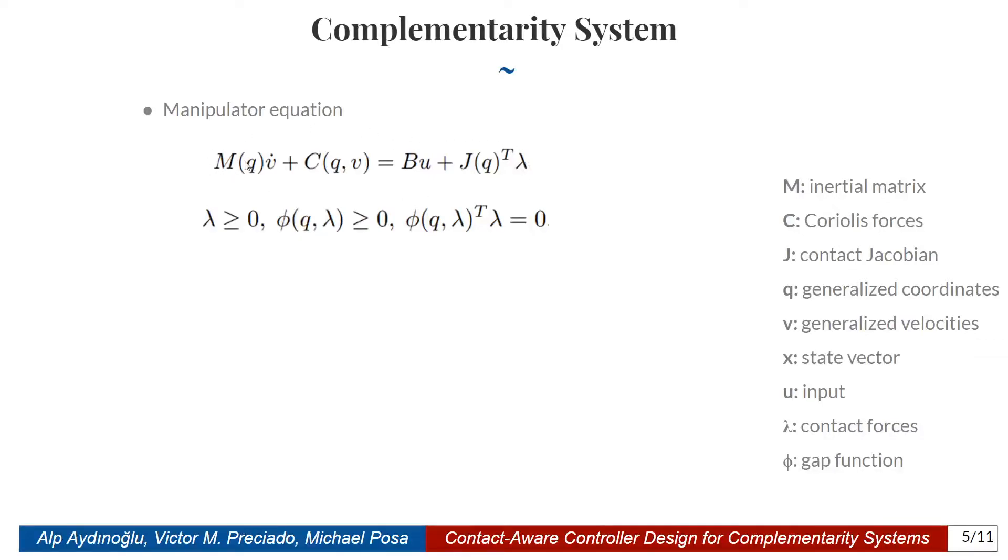In order to design such controllers, we use the complementarity system framework. Here, we have the manipulator equation, where M is the inertia matrix, C is the Coriolis forces, B maps the input into the dynamics, and J is the contact Jacobian. Here, you can see this dynamic looks like non-hybrid dynamics, but this lambda, with the complementarity constraints, captures this hybrid nature of the system.